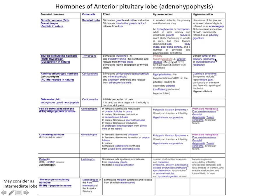Hypersecretion of TSH causes a benign tumor of the pituitary. The third hormone is ACTH, or adrenocorticotropic hormone, secreted from the corticotropes. It stimulates glucocorticoid, mineralocorticoid, and androgen synthesis and release from the adrenocortical cells. Hyposecretion causes hypopituitarism, also called adrenal insufficiency. Hypersecretion causes Cushing's syndrome, whose symptoms include rapid weight gain, particularly in the trunk region and face.